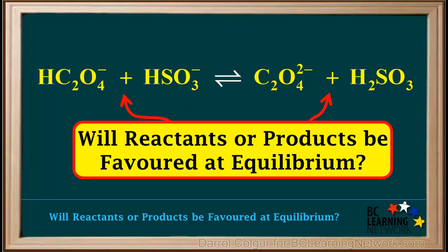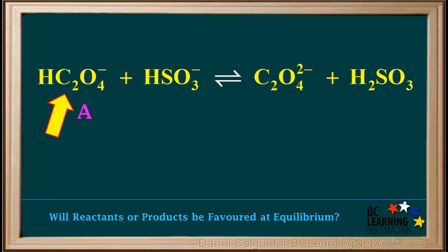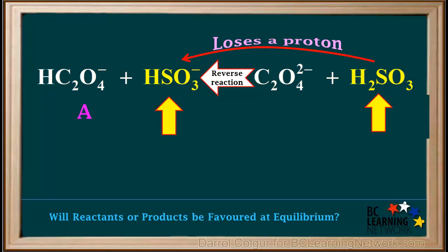The next question is, will reactants or products be favored at equilibrium? To answer that, we start by identifying the acid on the left side and the acid on the right side. We already know that the acid on the left side is HC₂O₄⁻. To find the acid on the right side, we consider the reverse reaction. As the reverse reaction occurs, the H₂SO₃ is the species that loses a proton. So H₂SO₃ is the acid on the right.